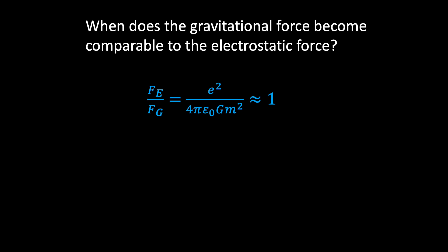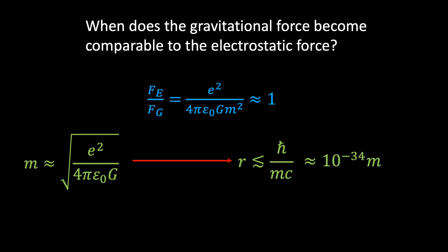In other words, at what distance scale will the gravitational force become comparable to the electrostatic force, such that the ratio of the two forces becomes equal to 1? If we look at the expression for the ratio of the electric and gravitational forces, we can estimate the mass required to make this ratio equal to 1. Rearranging for m, we find the following expression. This mass value can then be converted into an energy value, which we can then plug into the uncertainty principle to tell us at what length scale this will occur.